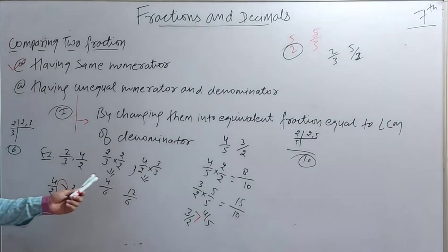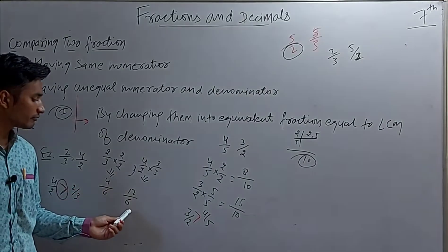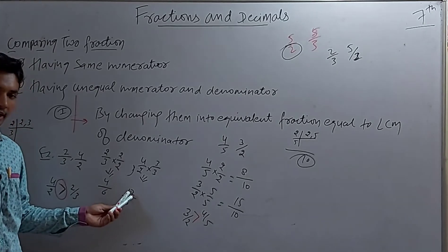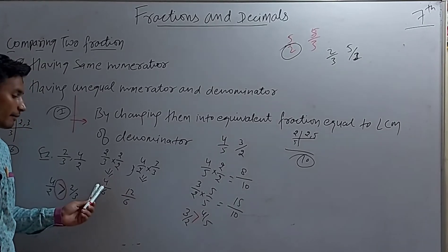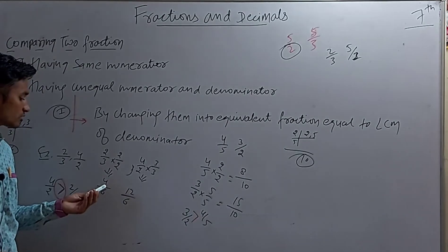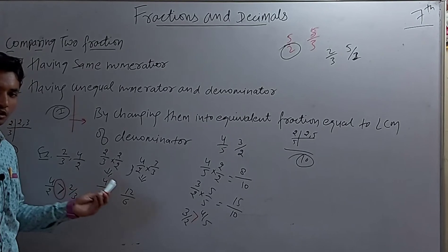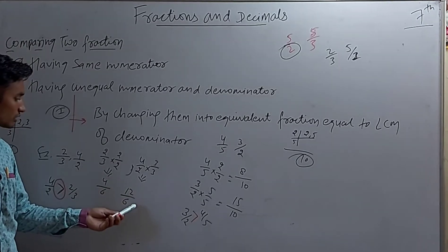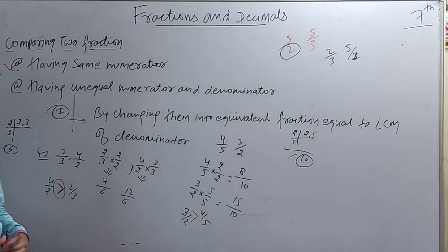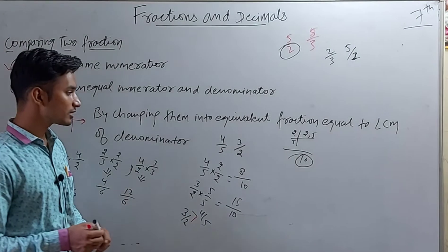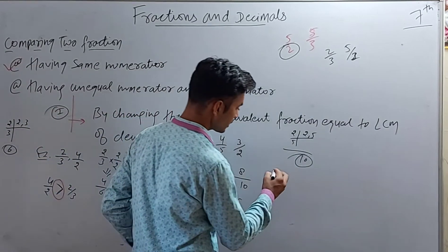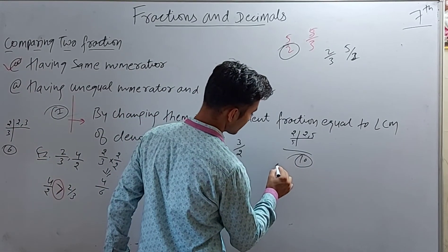We converted into equivalent fractions. Here we have denominator 6 in both, and dividing gives 0-point-something, which is smaller. That is why we wrote 4/2 is greater than 2/3. Let's take another example.